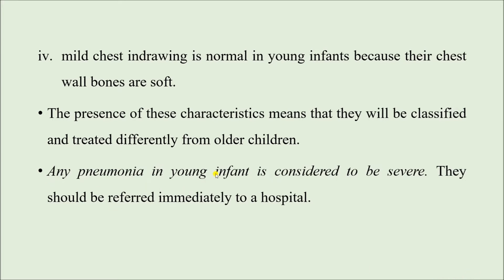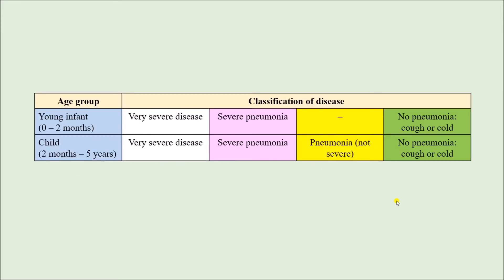Any pneumonia in the young infant is considered to be severe and they have to be referred immediately to the hospital. That is why there is no 'pneumonia that is not severe' in this classification for the age group 0 to 2 months. So whenever we have pneumonia it has to be a serious or severe condition — either Severe Pneumonia or Very Severe Disease.